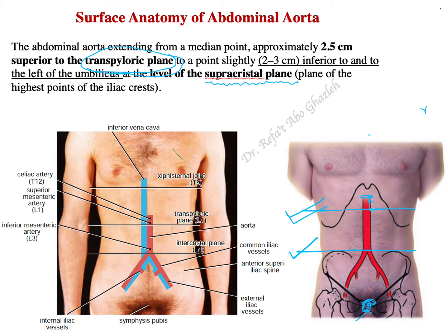So the abdominal aorta starts two to three centimeters above the transpyloric plane and terminates at the lower border of L4 — lumbar vertebra number four — which corresponds to the level of the supracristal plane, the plane connecting the highest points of the iliac crests.